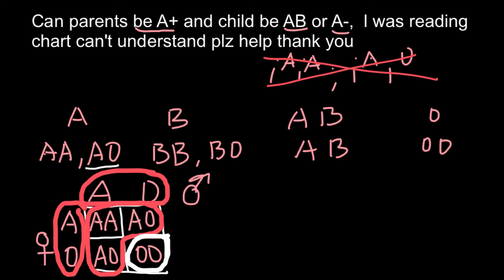Two parents who belong to the blood group A may have children that can be with blood group A or blood group O, as you see.